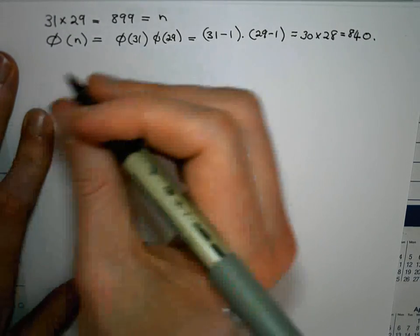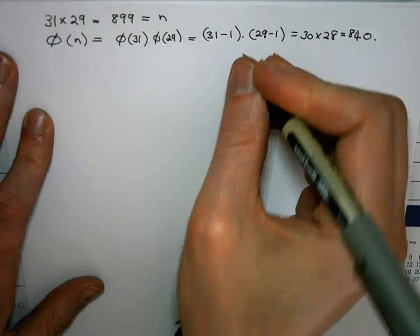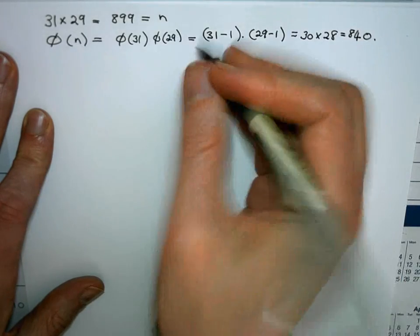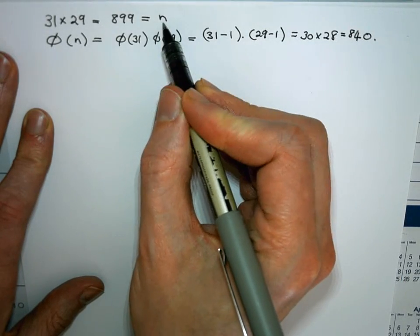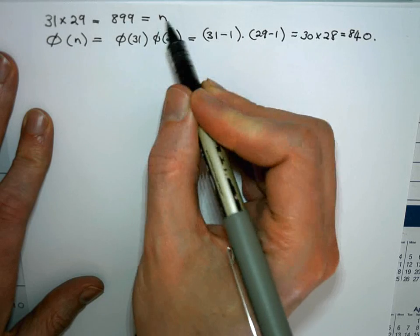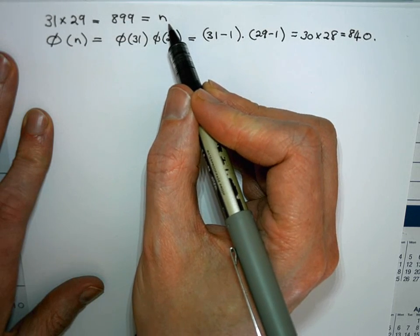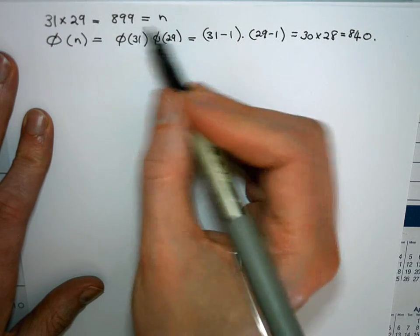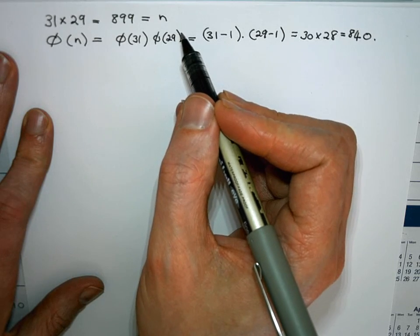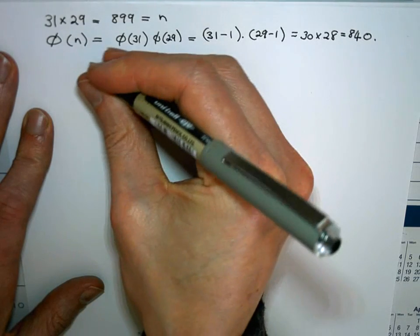Then we want to have two numbers d and e which would together with n form our private and public keys respectively. So these d and e's are not just any d and e's. They need to satisfy the congruence